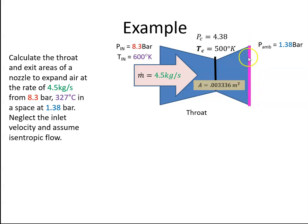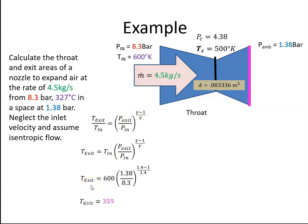The area at the actual exit, then. Well, we need to calculate the temperature at the exit using our isentropic equation. So if I plug in the values, I'll get the temperature at the exit to be 359 degrees Kelvin. The density at the exit will be the pressure at the exit all over RT. When I plug those values in, it's 1.38 bar. And again, converting bar to newtons per meter squared or pascals, we multiply by 100,000. R is 287. The temperature at the exit is 359, and that gives me a density of 1.33 kilograms per meter cubed.